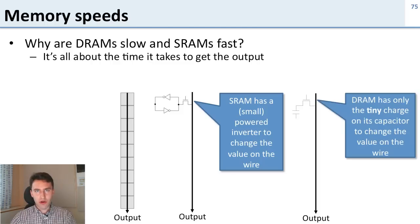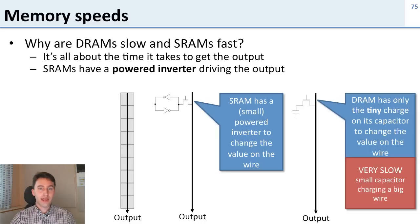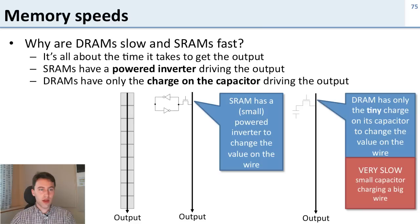DRAM however doesn't have any power. All it has is whatever charge you've stored on that capacitor. So this is a teeny little capacitor hooked up to a really long wire and it's slow. You've got a teeny capacitor trying to charge up a large wire and it's going to take a long time. So SRAMs have a powered inverter driving their output and DRAMs have only whatever charge is left in the capacitor driving your output. And this is why one of them is fast and the other slow.